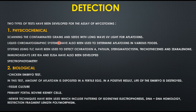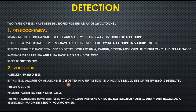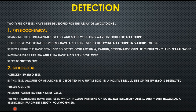For biological methods, the chick embryo test is commonly used: a specific amount of aflatoxin is deposited in a fertilized egg, and a positive result destroys the life of the embryo. Tissue culture using primary fetal bovine kidney cells is also used. Newer techniques include isoenzyme electrophoresis patterns, DNA homology, and restriction fragment length polymorphism (RFLP).